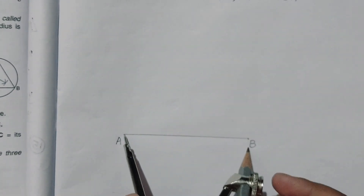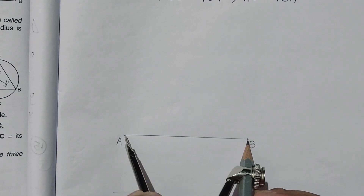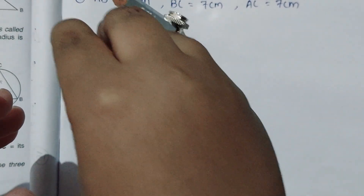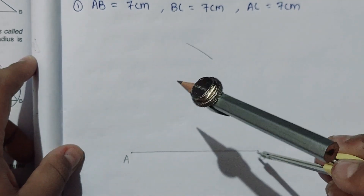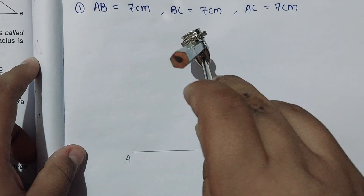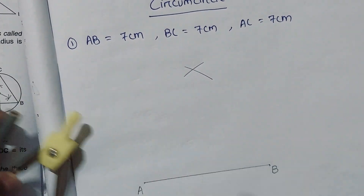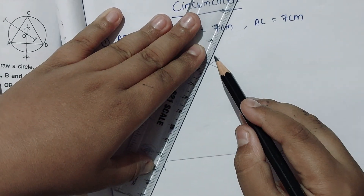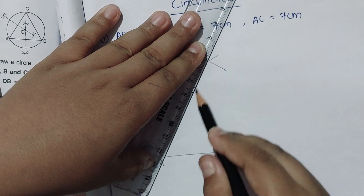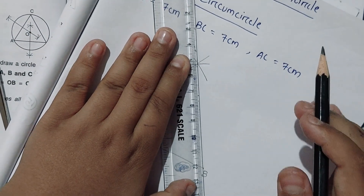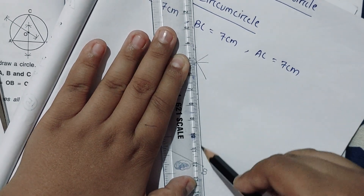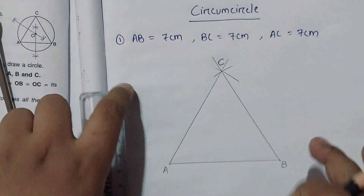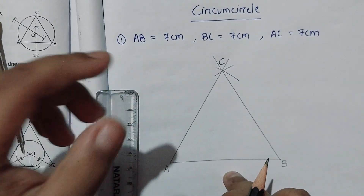With the compass set to 7 cm, we cut an arc from point A. With the same measurement, we place the compass on point B and cut another arc. Where these two arcs intersect is point C. We then take the scale and join the lines to complete our equilateral triangle with all sides of 7 cm.